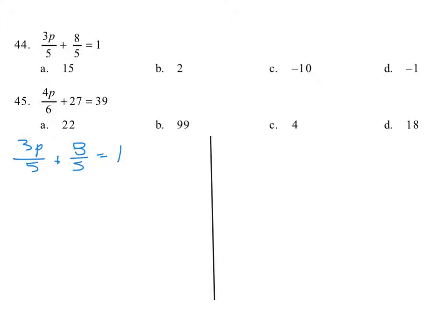I want to clear that fraction on the bottom, so I'm going to multiply both sides by 5. 5 parenthesis 3p over 5 plus 8 over 5 equals 5 times parenthesis 1.